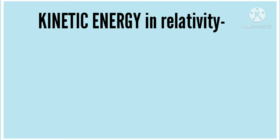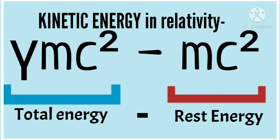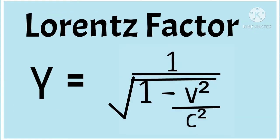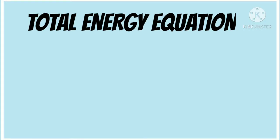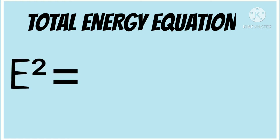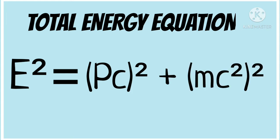In the theory of special relativity, kinetic energy of an object is given by gamma times mass times the speed of light squared, minus mass times the speed of light squared. Here gamma refers to a special factor called the Lorentz factor — this number that you can see on the screen. I am going to explain why objects with mass cannot travel at the speed of light using the total energy equation in relativity: total energy squared equals momentum times the speed of light, whole squared, plus mass times the speed of light squared, whole squared. I could also show this using the kinetic energy equation, but this equation can answer some other questions as well, so I am sticking with it.